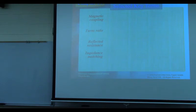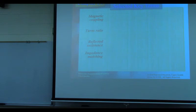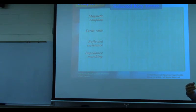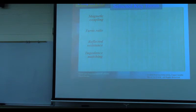Reflected resistance: the resistance on the secondary side, when viewed from the primary side, is changed by the square of the turn ratio — just like a mirror reflection. The load on the secondary can be reflected to the primary side and vice versa. This is used for impedance matching.